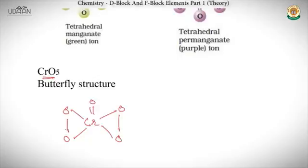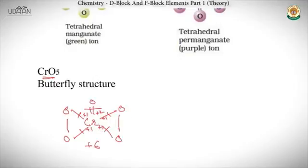For CrO₅, if we calculate the oxidation state of chromium: the peroxo oxygens contribute −1 each (two peroxo groups give −2 each, total −4) and the double-bonded oxygen gives −2, totaling −6, so Cr is +6. Many people mistakenly calculate +10 by treating all oxygens as −2, but the correct oxidation state of Cr in CrO₅ is +6.